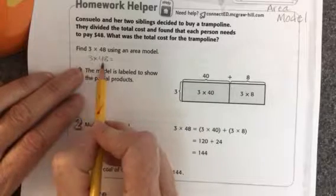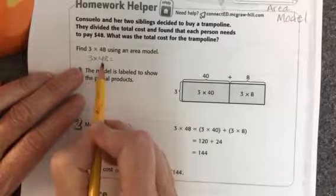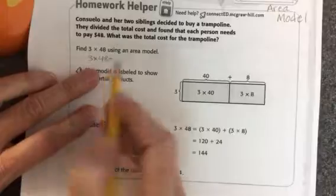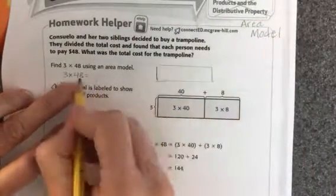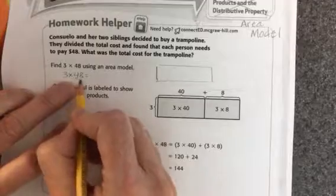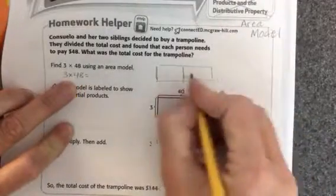I'm going to find the number here that has the most digits in it. 48 has the most digits and it has two digits, so I will make a box. It has two place value places, so I'm going to have two boxes.